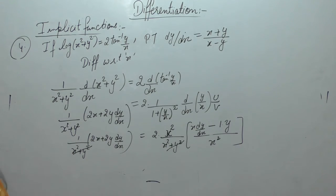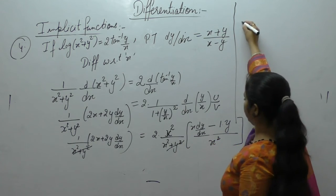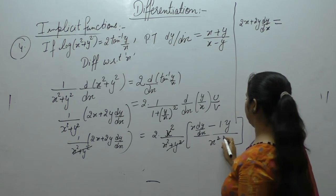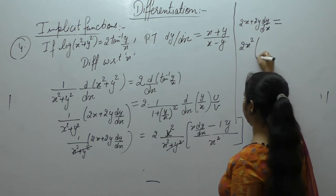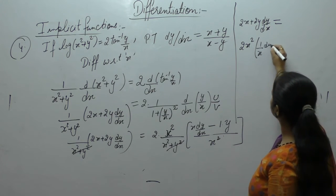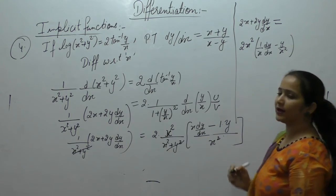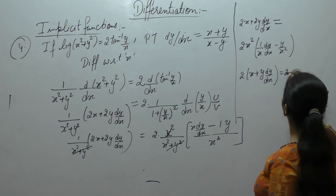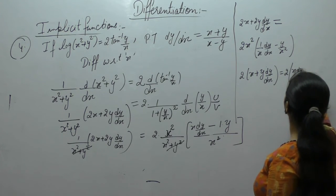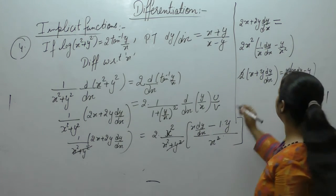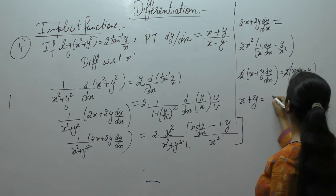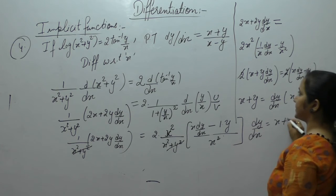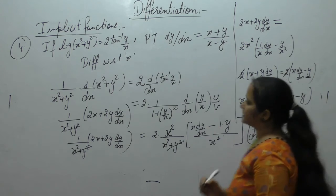Since (x² + y²) appears on both sides it cancels, leaving 2x + 2y·dy/dx = 2(x·dy/dx − y). Taking 2 common: x + y·dy/dx = x·dy/dx − y. Rearranging, y moves to left: x + y = (x − y)·dy/dx. Therefore dy/dx = (x + y)/(x − y), which is what we wanted to prove.